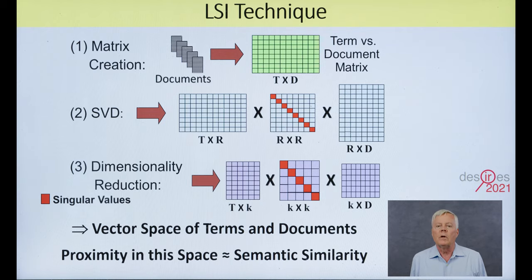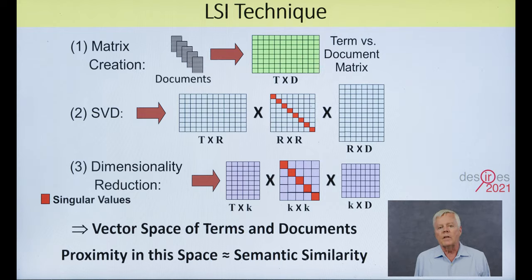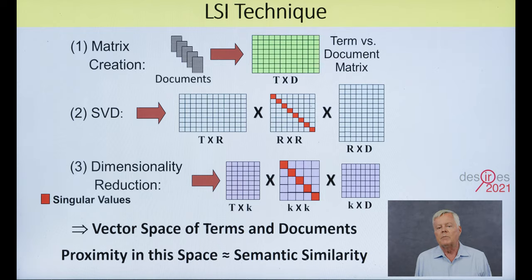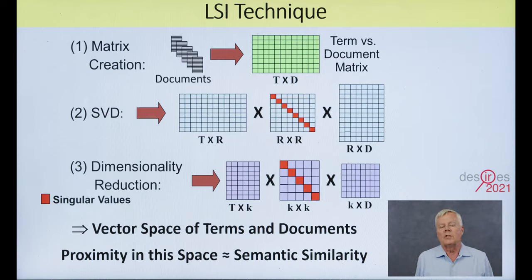The technique of LSI is well known, so I'm not going to spend much time on this, but basically you have a collection of documents containing text of interest, you parse through the documents, create a term-document matrix, and apply the technique of singular value decomposition to re-express that matrix as a product of three matrices, one of which is diagonal in the singular values. We then keep just the top few hundred singular values and set all the rest to zero. After that, we create a vector space of greatly reduced dimensionality, in which the terms and documents are represented by vectors. The beauty of the technique is that the proximity of two vectors in that space turns out to be a very good approximation of human judgment of semantic similarity for the items represented by those vectors.